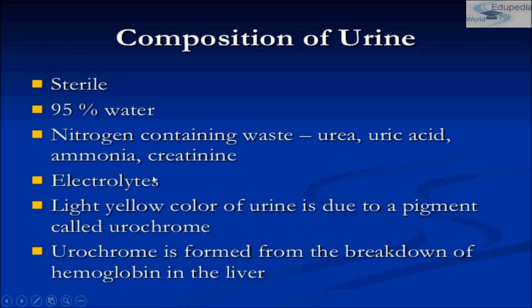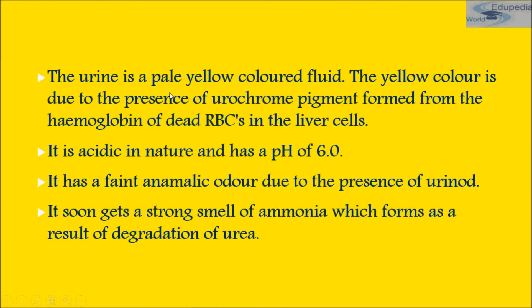Urine also contains electrolytes. The light yellow color of urine is due to a pigment called urochrome, which is produced from bile pigments such as biliverdin and bilirubin. Urochrome is formed from the breakdown of hemoglobin in the liver. Urine can be described as a pale yellow colored fluid; the yellow color is due to the urochrome pigment formed from the hemoglobin of dead RBCs in liver cells.